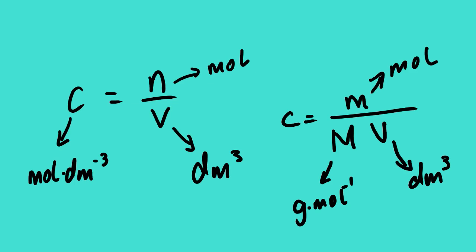Concentration — the SI unit is the combination of mole and volume, which will be mole per dm³. The volume is measured in dm³ and the number of moles is measured in mole. We can also look at this equation: concentration in mole per dm³ equals mass in grams divided by molar mass times volume in dm³.